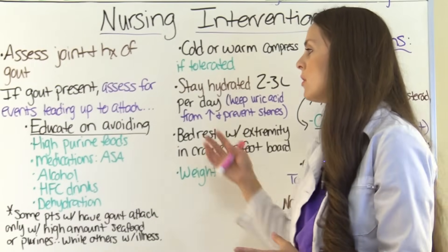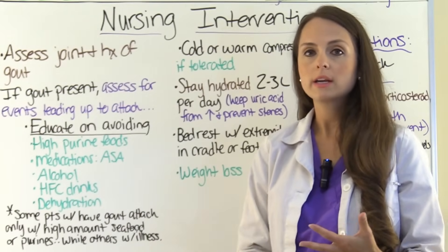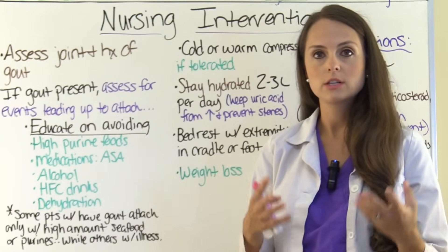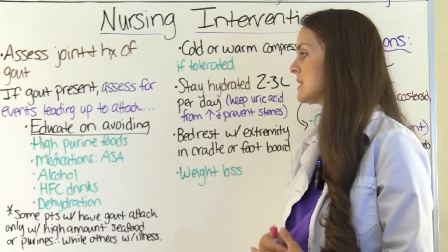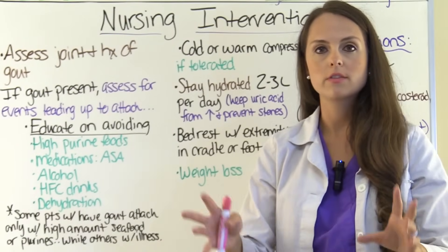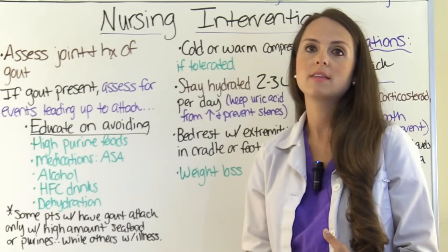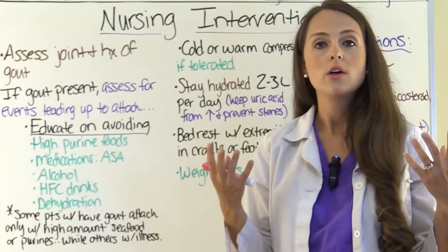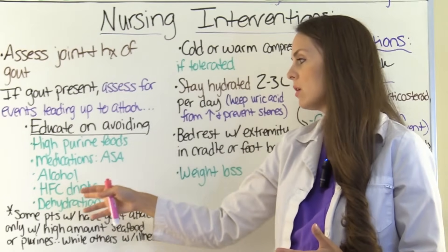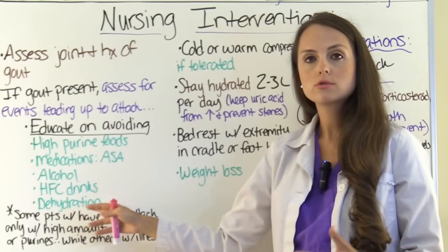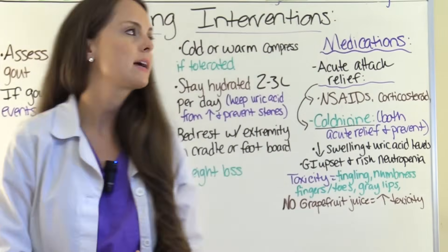Educate the patient on avoiding those high purine foods — seafood, internal organ meats, red meats, and alcohol, especially beer. Also watch taking medications such as aspirin, because aspirin is easy to get over the counter and the patient may think about taking it for pain, but in reality they're making their condition worse because it increases uric acid levels. So no aspirin, avoid alcohol, avoid high fructose corn syrup drinks, and avoid becoming dehydrated, because all those things increase uric acid levels.